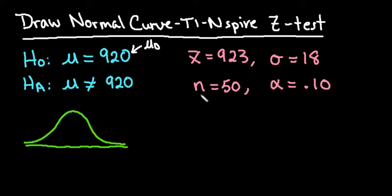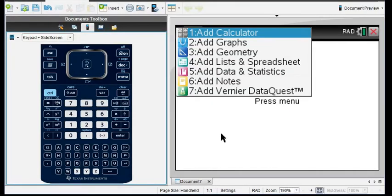x-bar is our sample mean, n is our sample size, and alpha is what we're going to compare our p-value to, to help us make our decision. And we do want to have a two-tail test on this one because it's not equal, so that when we shade our p-value, we will shade both tails. Let's grab the calculator.